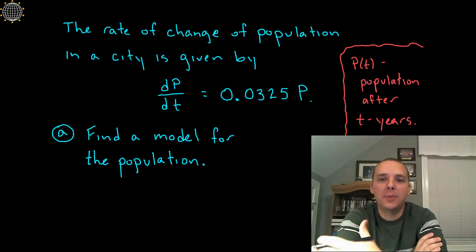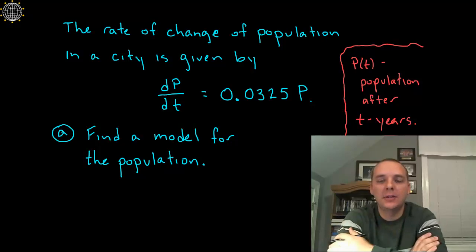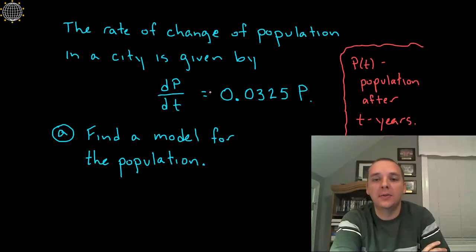Here we're being told that the rate of change of population in a city is given by this differential equation. This is an equation that has derivatives in it. And what they're asking us for, first of all, is a model for this population here.